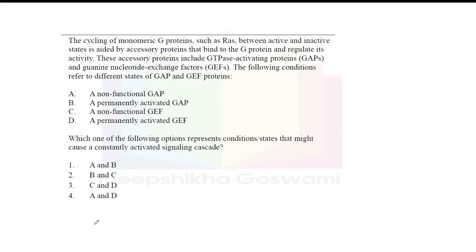The first question: the cycling of monomeric G proteins such as RAS between active and inactive state is aided by accessory proteins that bind to the G protein and regulate its activity. These accessory proteins include GTPase activating protein (GAP) and guanine nucleotide exchange factor (GEF). Which one of the following options represents the condition that might cause a constantly activated signaling cascade?